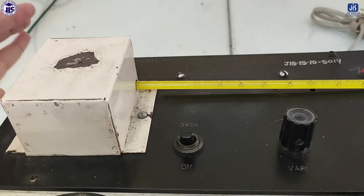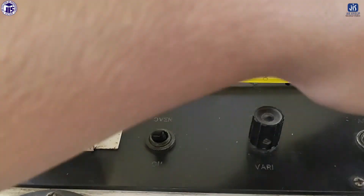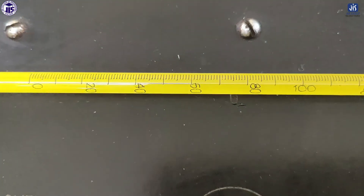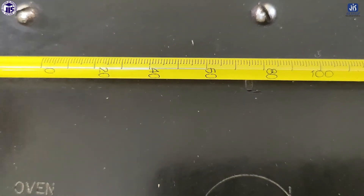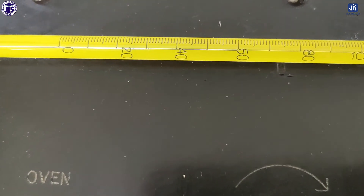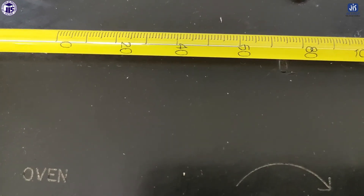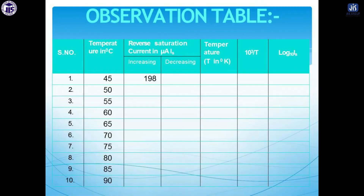Next, come to the temperature in Kelvin. You have to convert the degree centigrade temperature to Kelvin by adding 273: temperature in Kelvin = temperature in °C + 273. Whatever value you get is your Kelvin temperature. Then you have to calculate the inverse temperature, which is 1/T, where capital T always denotes the Kelvin temperature. So we calculate 1 divided by the Kelvin temperature.